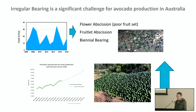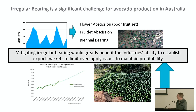As avocado production has increased, oversupply issues are starting to become a concern. With more plantings coming into bearing, these issues will only increase further. Therefore, developing management strategies to deal with irregular bearing would greatly benefit the industry's ability to establish export markets and maintain profitability.